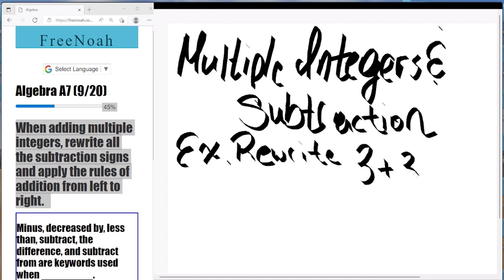So multiple integers and subtractions, we're going to rewrite 3 + 3 - (-3). How do we notice that minus sign? Well, we're going to use the subtraction, the subtracting integers rule.